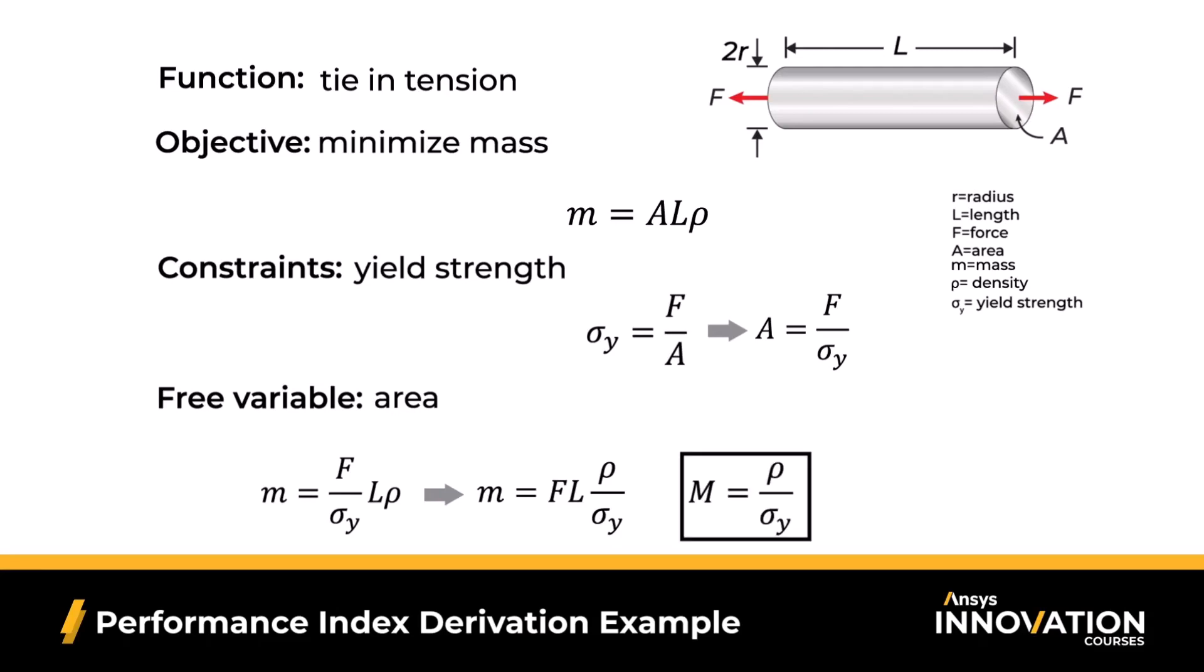Now, this performance index, denoted by capital M, is the term we would use to minimize our mass, as that's what our objective is. However, when using these indices with our Ashby charts, which we'll demo in our next lesson, it's more convenient to look at the maximum value. By taking the reciprocal, or the inverse, of our index, we now have the term we want to maximize, something for you to pay attention to during derivation.